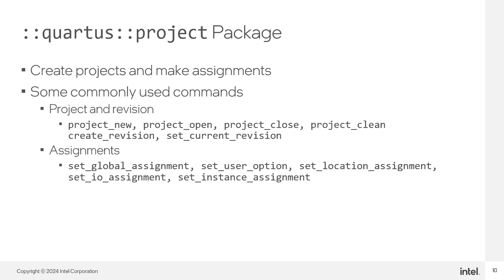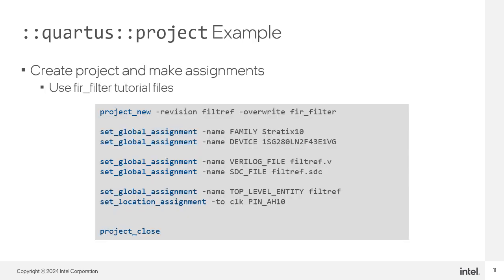Use create_revision to create a new revision, which contains an ultimate set of assignments for you to try on the current design. You use set_current_revision to specify which of the multiple revisions in your project is the current one. You can use assignment commands to make both general assignments that apply to the entire project or design-specific assignments that apply to specific design nodes or entities. As an example, the set_location_assignment can be used to make pin assignments.